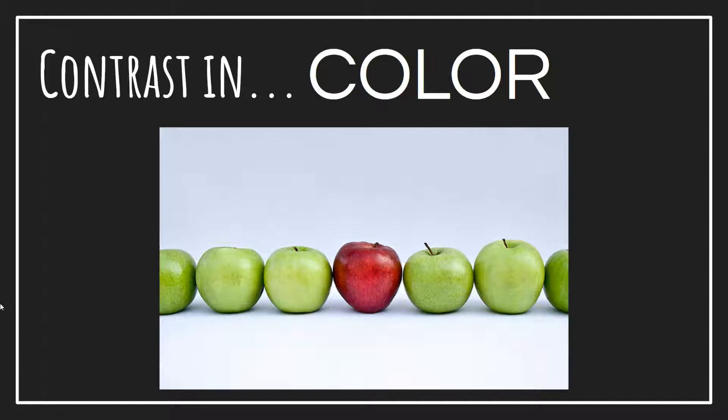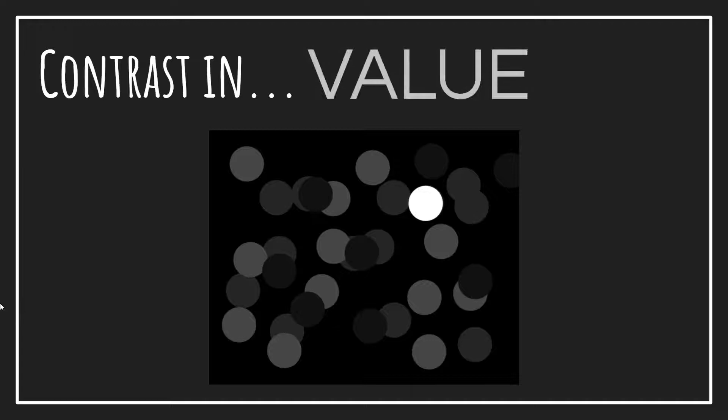This one has contrast in color. Notice how all the apples are green, but one of them is red, so there's a difference in color. It is not the greatest amount of contrast, but when you have red and green next to each other, even though they're not opposites on the color wheel, they are very different. For this next one, don't say color — it's not a difference in color. Notice how they're all the same shape as well. What we are seeing is a bunch of circles: some are black, some are light gray, some are medium gray, some are white. When we're talking about lightness and darkness, we're talking about value. So this one has contrast in value, and that's why that one white circle sticks out so much in comparison.